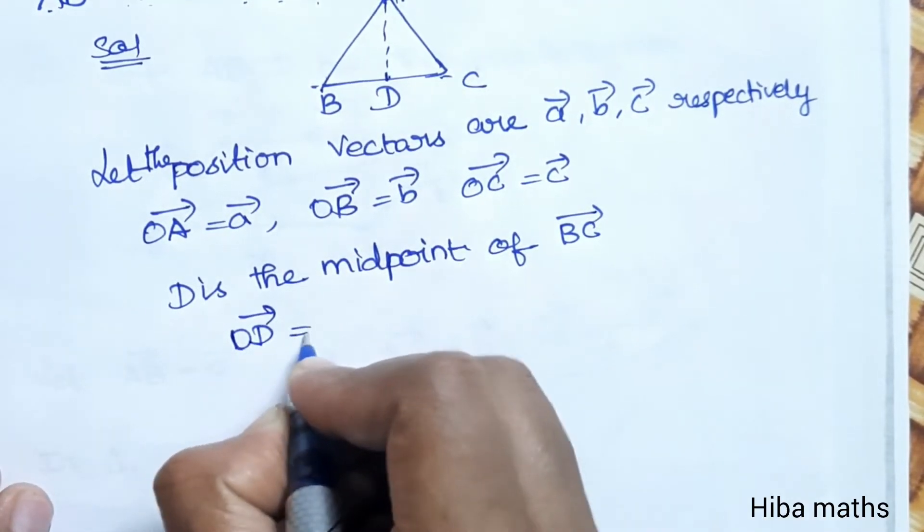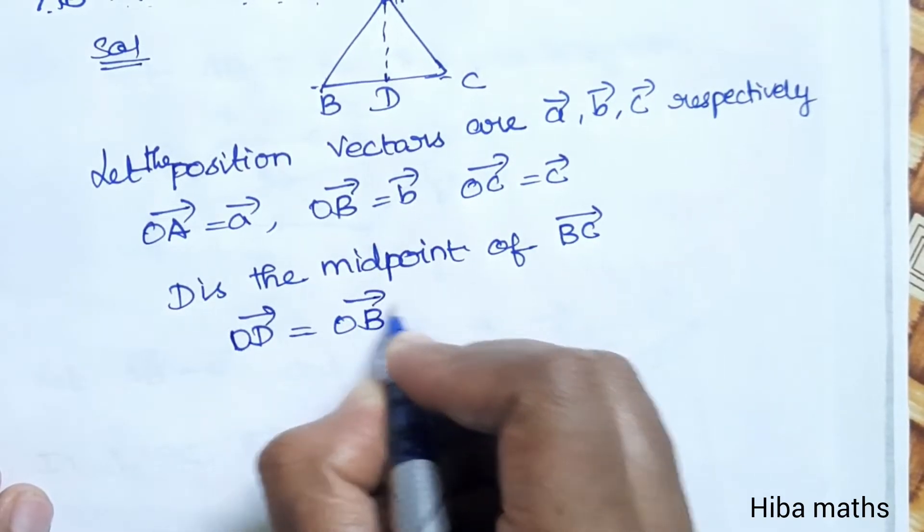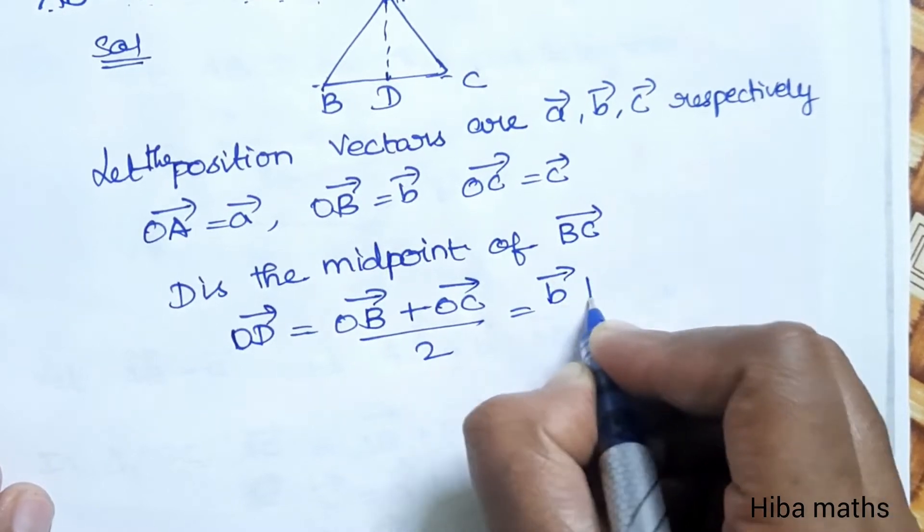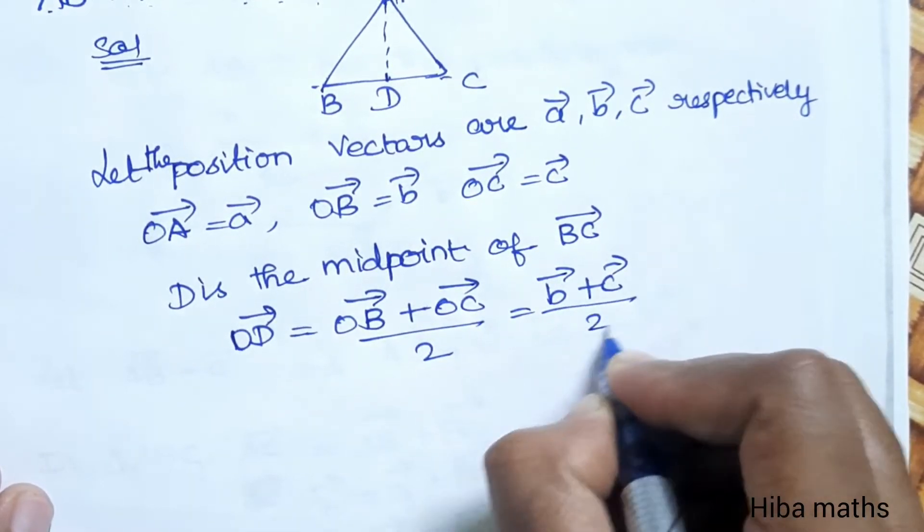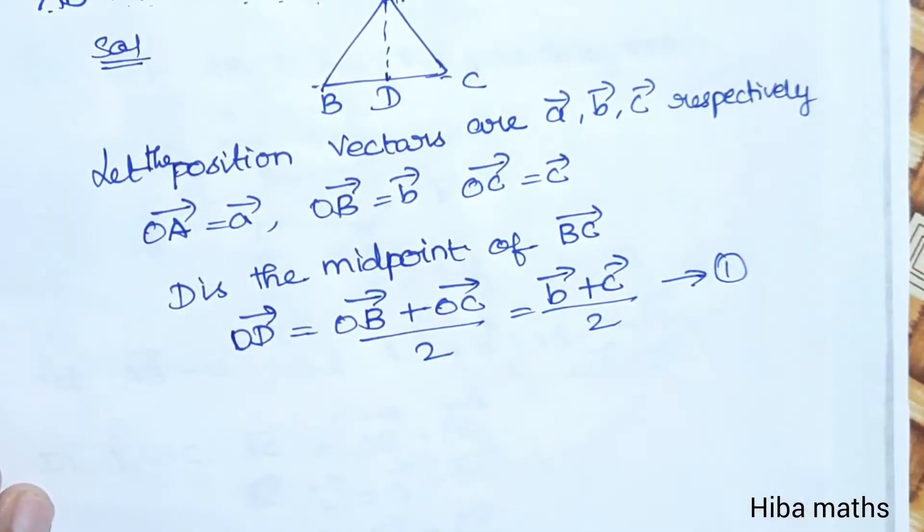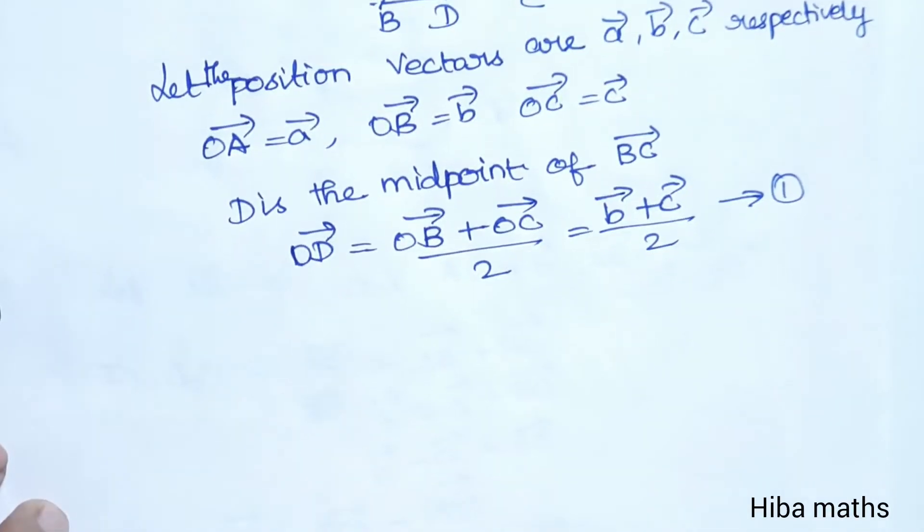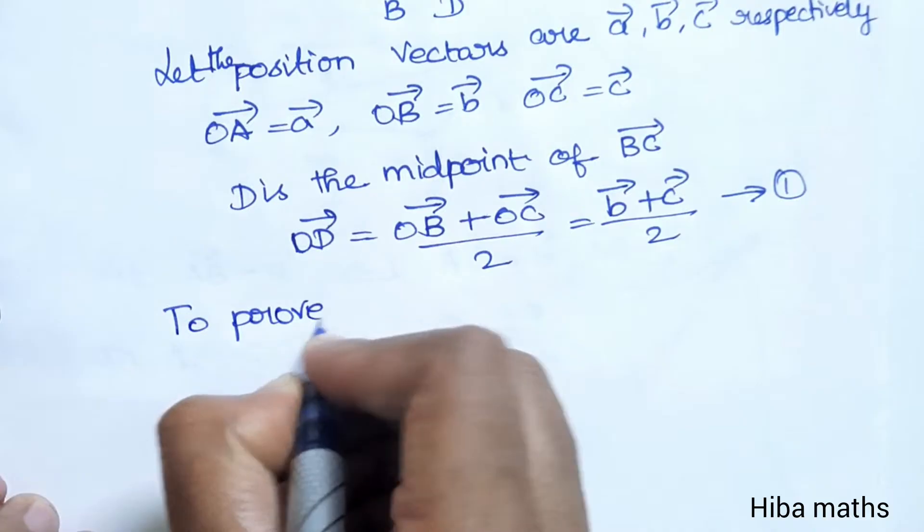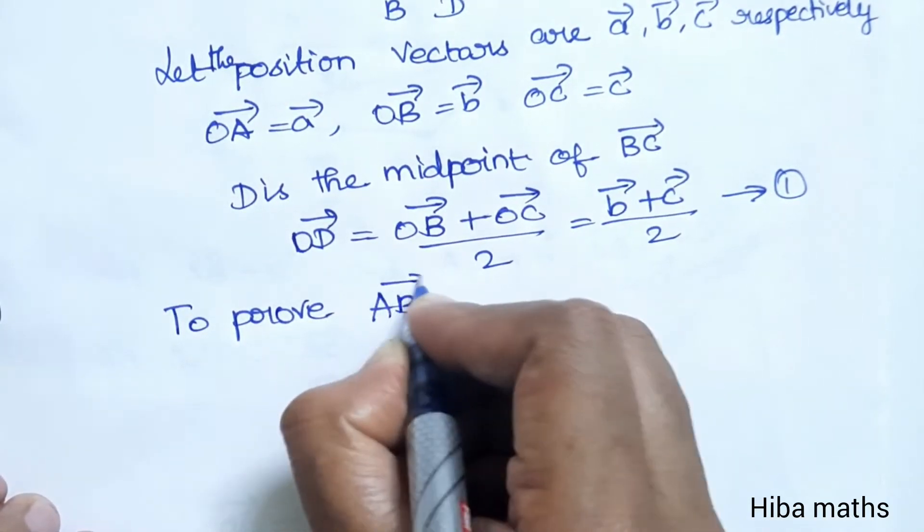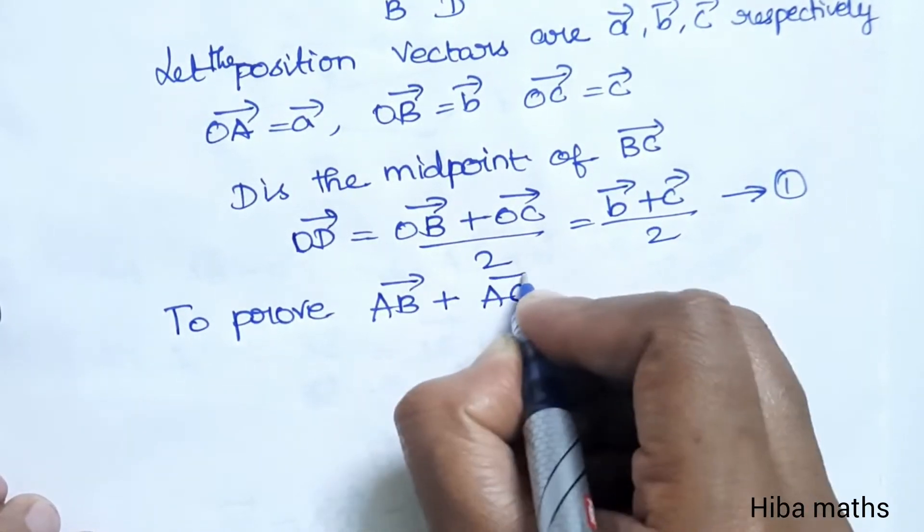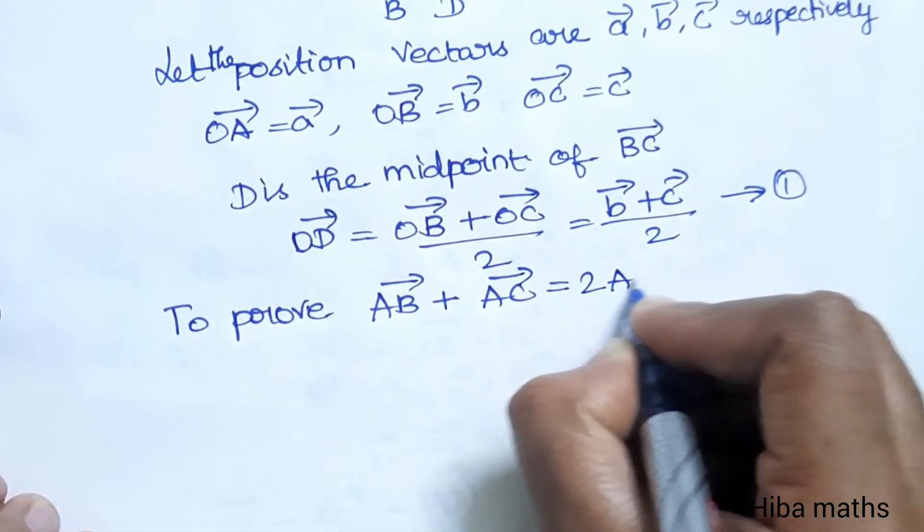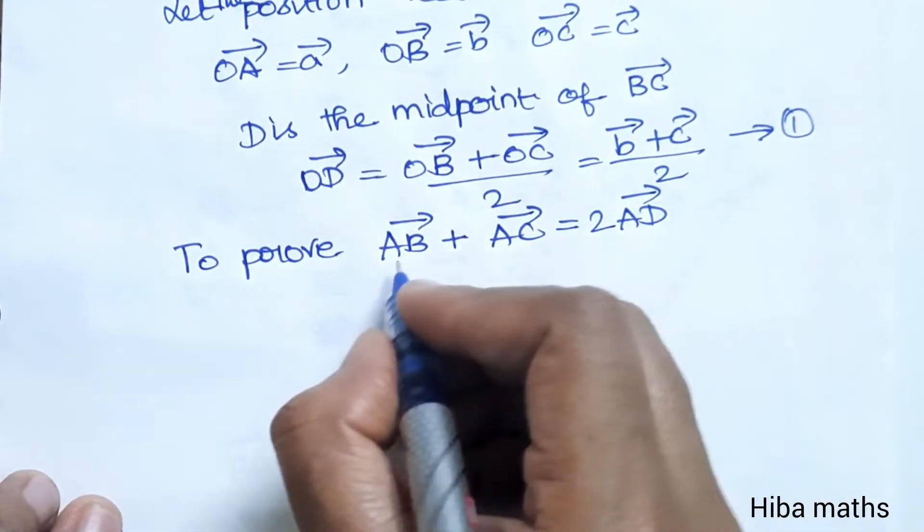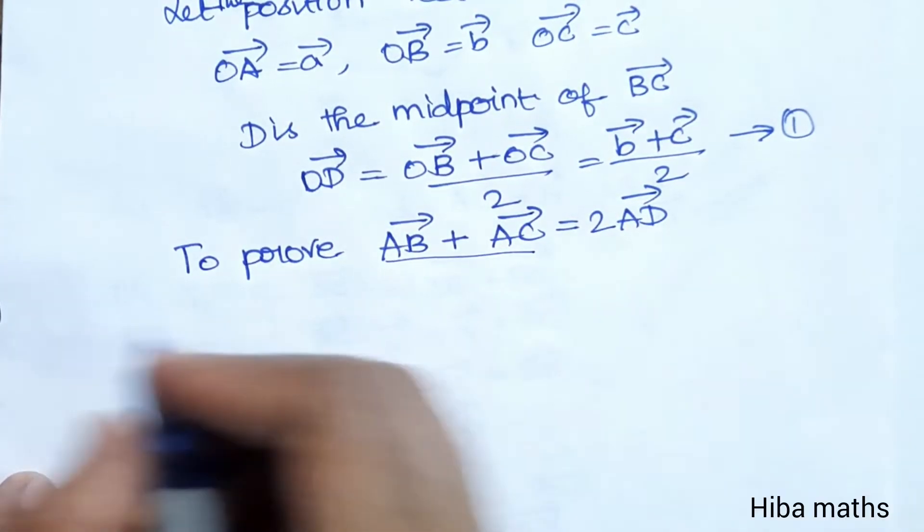D is the midpoint of the side BC. To prove AB vector plus AC vector is equal to 2 times AD vector, first I will solve the LHS, then I will solve the RHS.